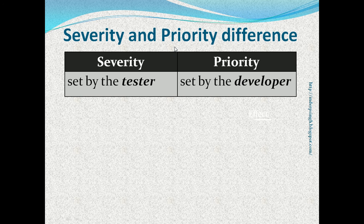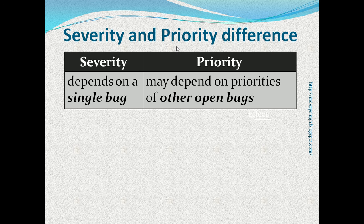Another main difference is that severity is set by the person who logs the bug report. Priority is also initially set by that person, but priority can be changed by the person who is assigned the bug report. The developer assigned the bug can change the priority based on their discussion with project stakeholders and their other pending work. The severity depends on that particular bug, but priority depends on multiple things like priorities of other open bugs, the probability of that bug causing a problem, and the bug severity.